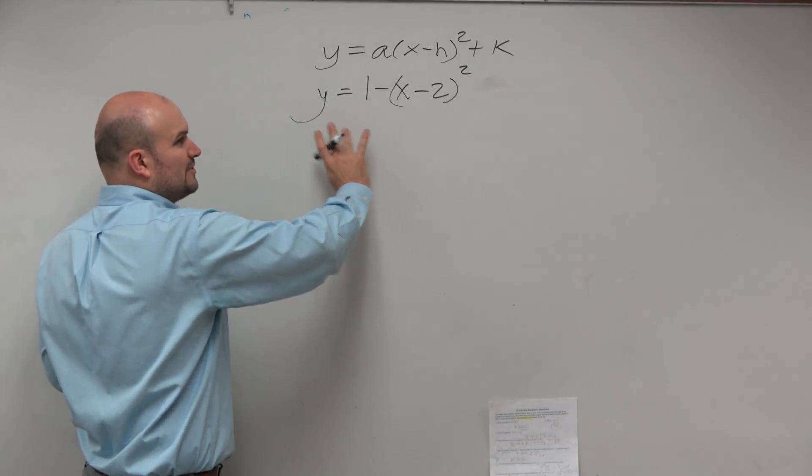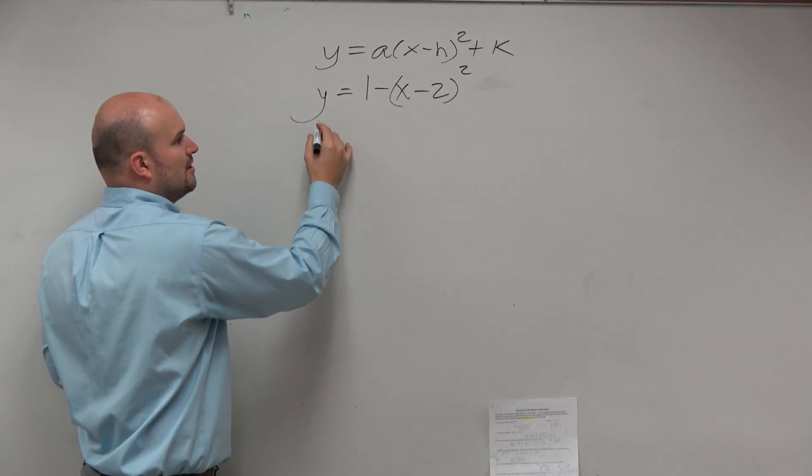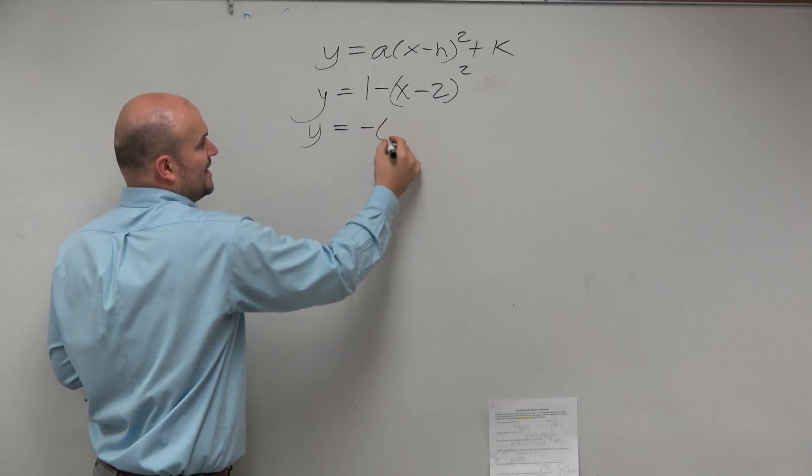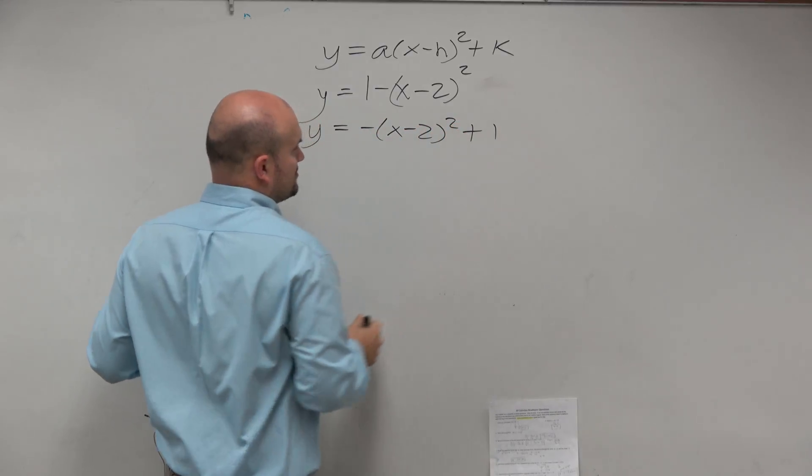So the first thing we want to do is rewrite this in the correct form. I'm going to rewrite this. I'm going to put the 1 on the other side. That is a positive 1. So it's going to be negative x minus 2 squared plus 1.